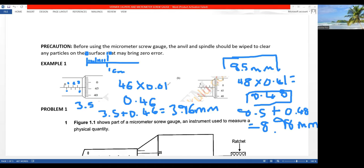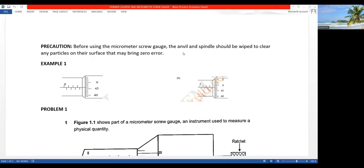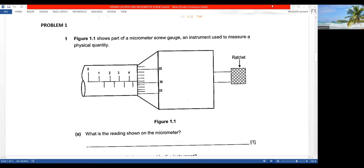So now, let's move on to the examination question, which is a past paper-based question. We'll see if you're able to answer that. We have that question there. It says 1.1 shows part of a micrometer screw gauge, an instrument used to measure a physical quantity. And then we're saying, what is the reading shown on the micrometer? So, here we go. We start from here. That is 0, we have 1, 1.5, that's 2, 2.5, 3, 3.5, 4, 4.5. So, the reading on the sleeve is 4.5.